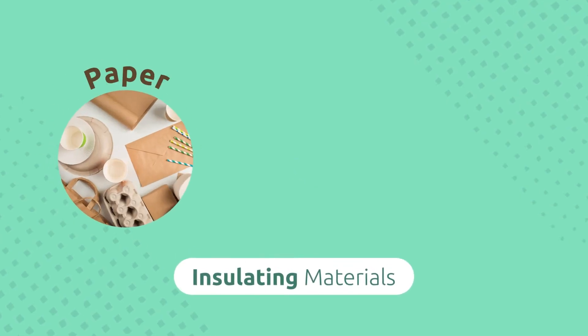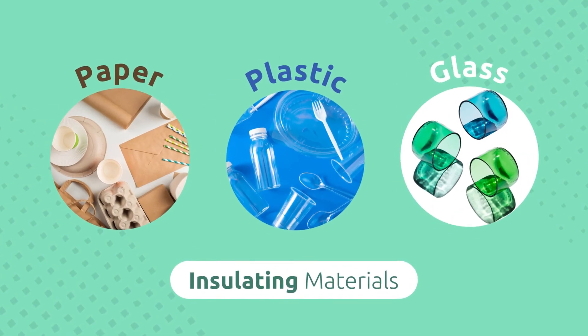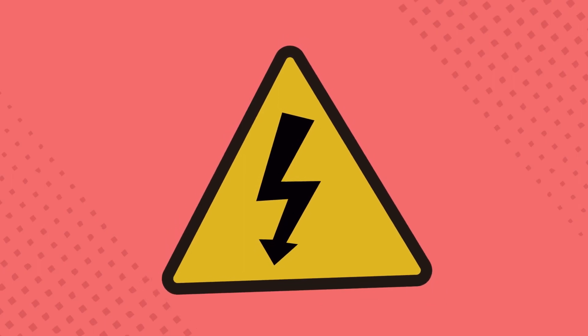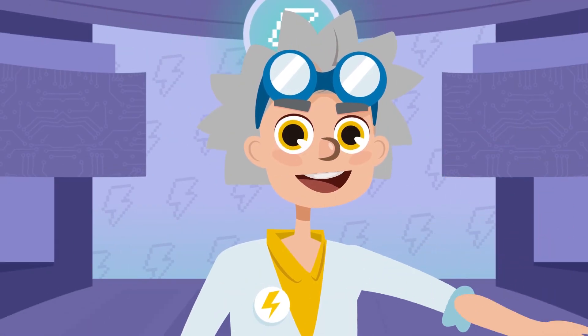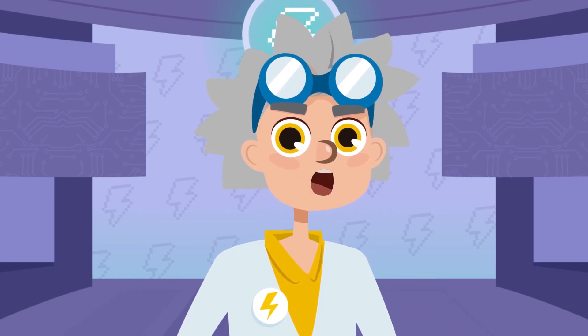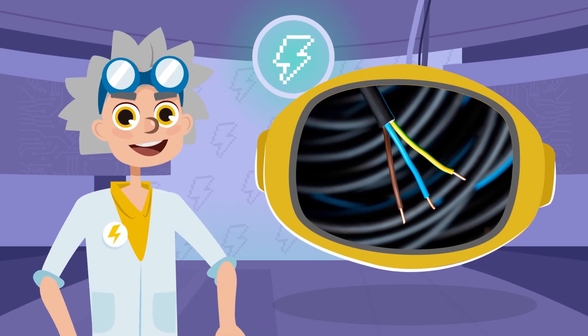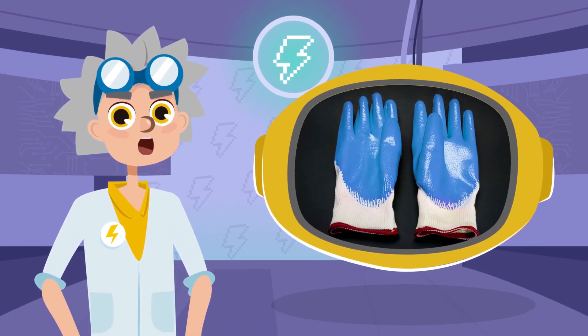Other materials such as paper, plastic, or glass are also insulators. As you know, electricity can be very dangerous. So insulating materials are used to protect us from it. For example, the outside of wires are made of plastic. And electricians' gloves are made of rubber.